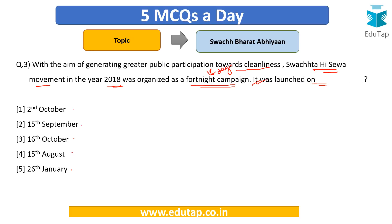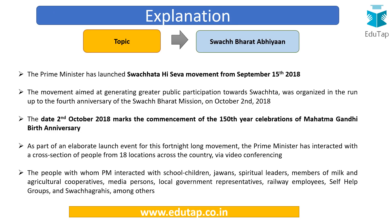The answer is option two — 15th September. The Swachhta Hi Seva movement was launched in 2018 on September 15th. In 2017 it was launched on September 16th, but the date was moved earlier so that the fortnight campaign concludes on 2nd October — which marks the commencement of the 150th year of Mahatma Gandhi's birth anniversary.